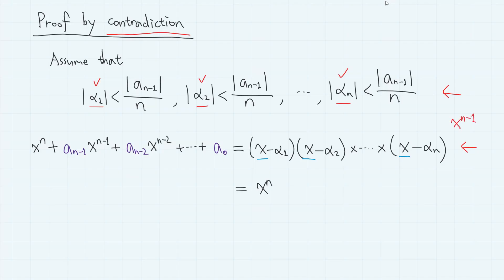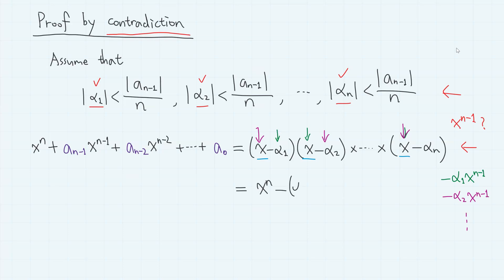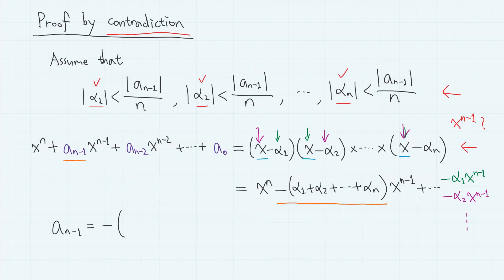As for the x to the power of n minus 1 term, we can deduce like this: if we choose minus alpha 1 from the first factor and x from every other factor, we get minus alpha 1 times x to the power of n minus 1. Similarly, choosing minus alpha 2 gives minus alpha 2 times x to the power of n minus 1, and so on. So the term with degree n minus 1 is minus (alpha 1 plus alpha 2 plus ... plus alpha n) times x to the power of n minus 1. Therefore, comparing coefficients, a_{n-1} equals minus the sum of all roots: alpha 1 plus alpha 2 plus ... plus alpha n.